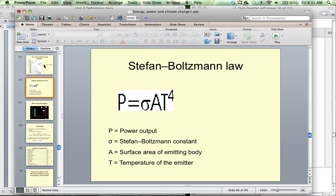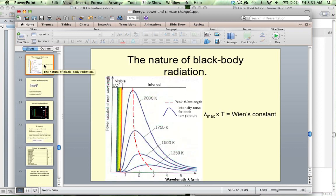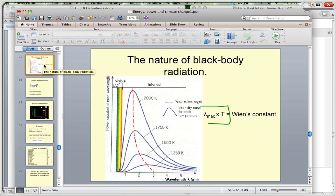And this is Wien's law, where your lambda max times your temperature is equal to Wien's constant. Wien's constant is 2.9 times 10 to the negative 3, and that's actually given to you in the astrophysics part of the data booklet. That value there.